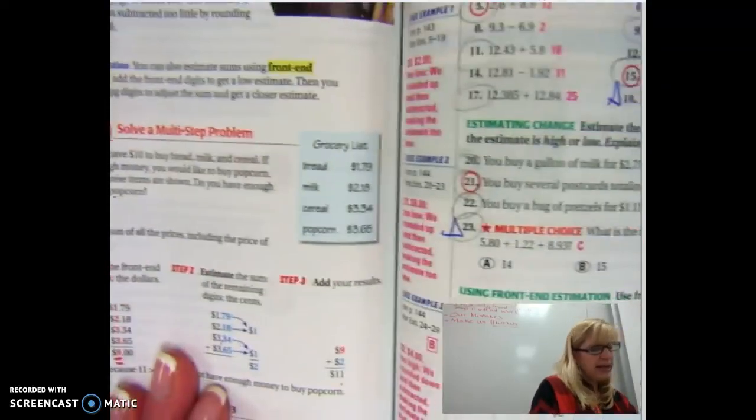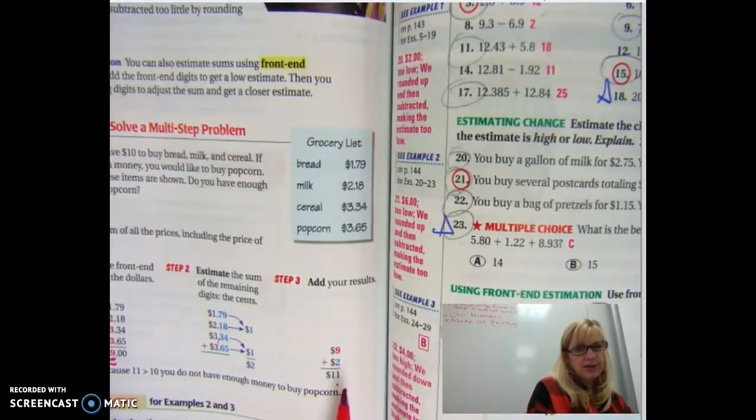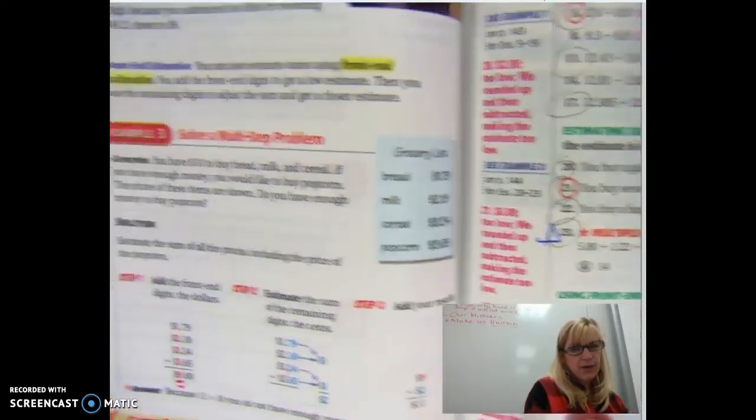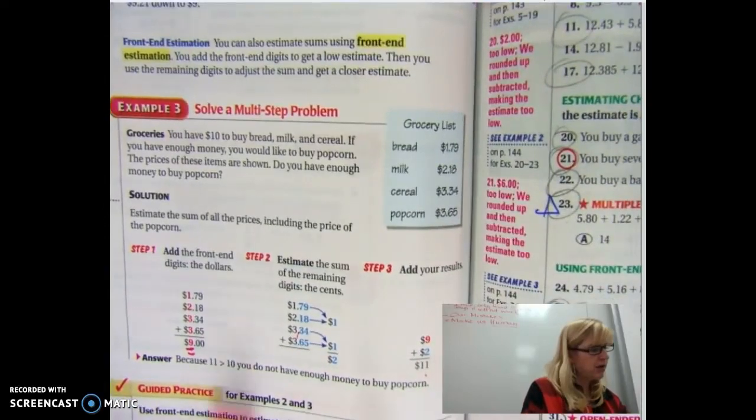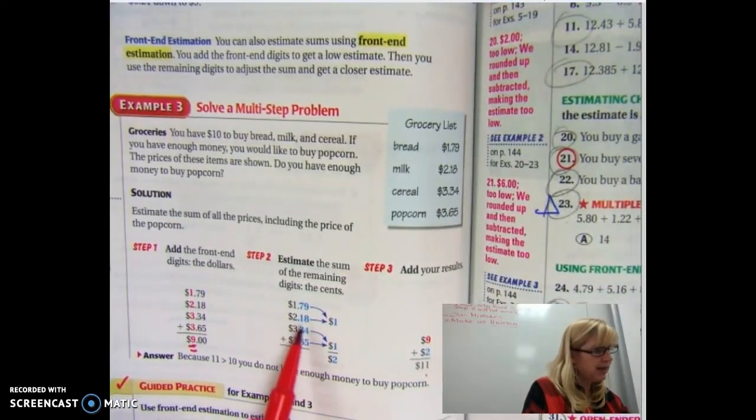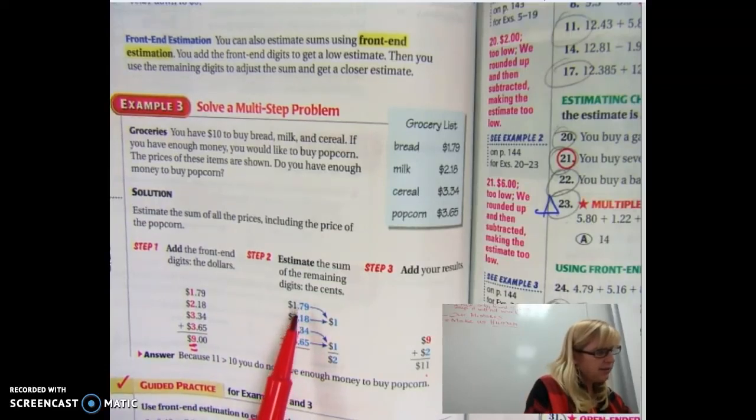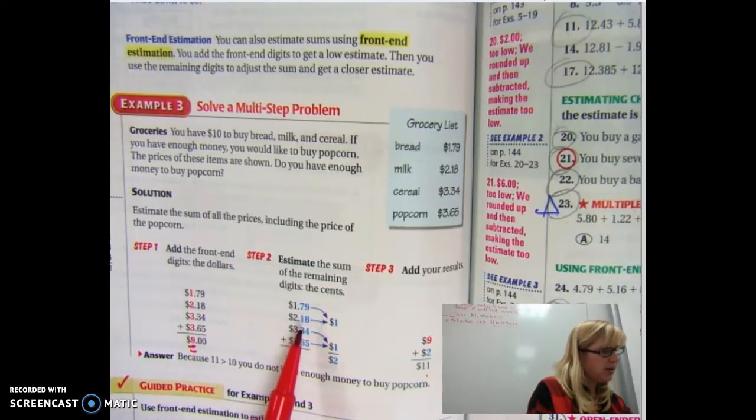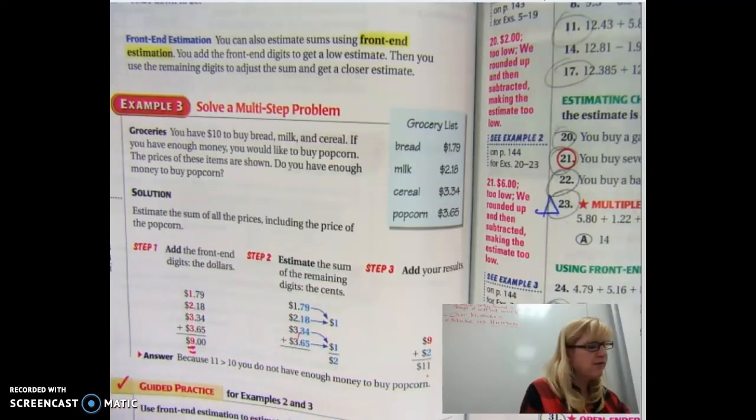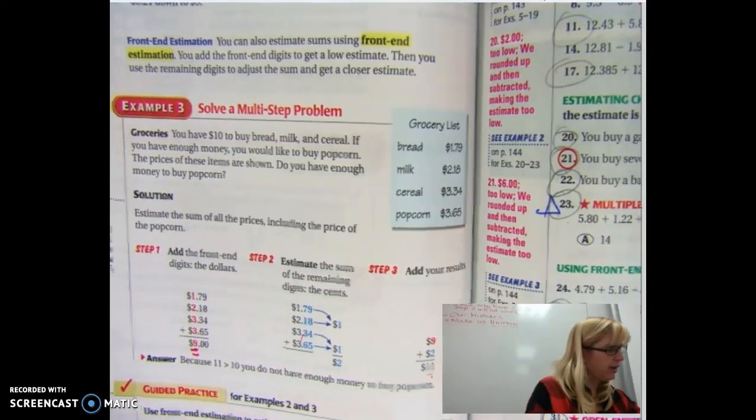So step three is add your two results, the nine plus the two. Take another look through here and draw those arrows and see how 79 plus 18. So 79 you'd need about 21 cents to make a real dollar. So we're going to be a little shy of these numbers, but at least we get a ballpark figure.